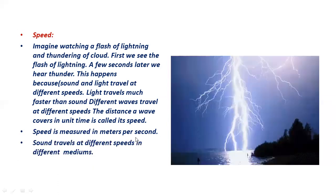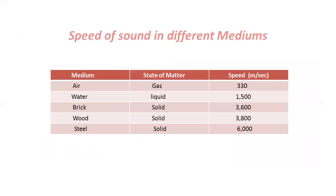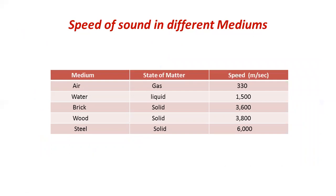Sound travels at different speeds in different mediums. Looking at a table: the speed of sound in air is 330 m/s, in water 1500 m/s, in brick 3600 m/s, in wood 3800 m/s, and the maximum speed is in steel (a metal) at 6000 m/s. So the speed of sound is greatest in metals.